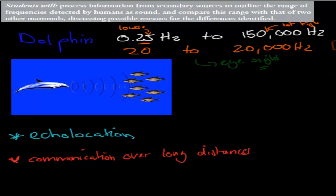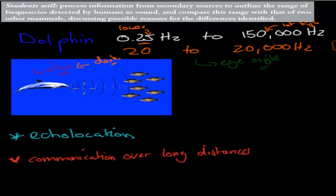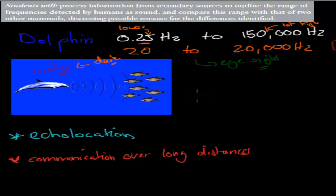A dolphin, for example, lives in water. If you've been in dark ocean water, you can't see very far — water often means lots of darkness. So a dolphin can't rely purely on its sight to find prey and communicate. It has to use something else, and that something else is really good hearing — very high frequencies and very low frequencies.